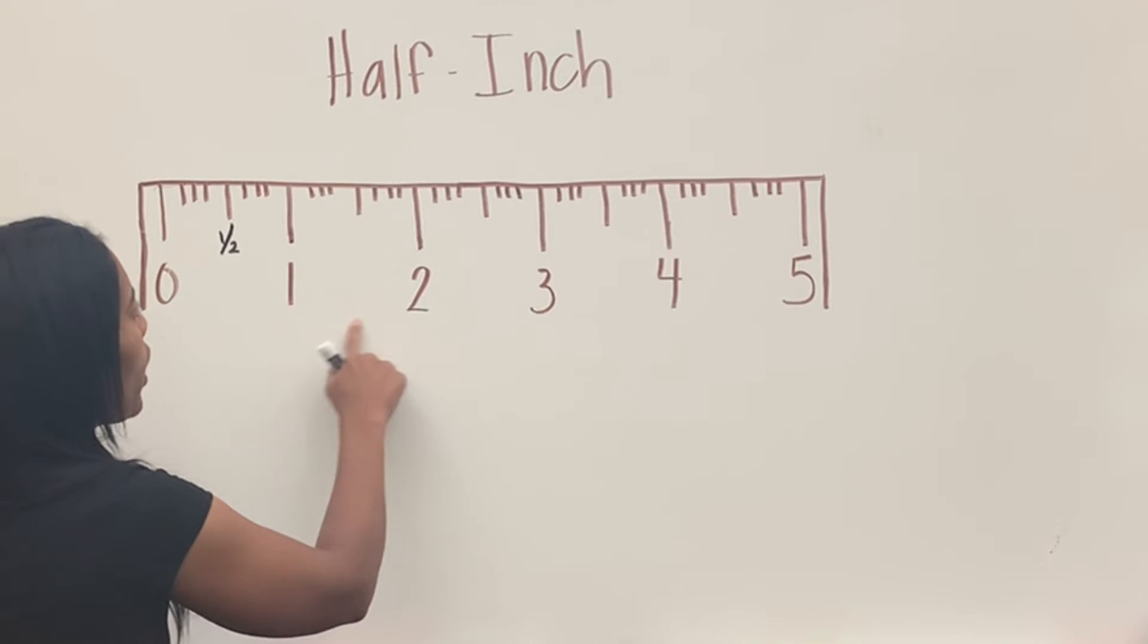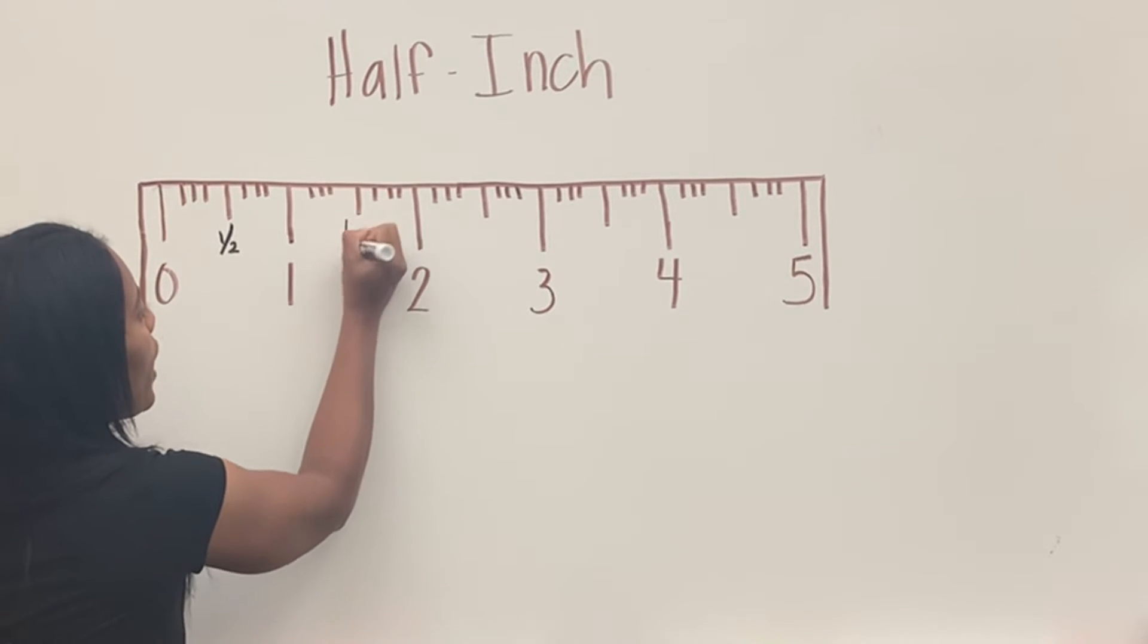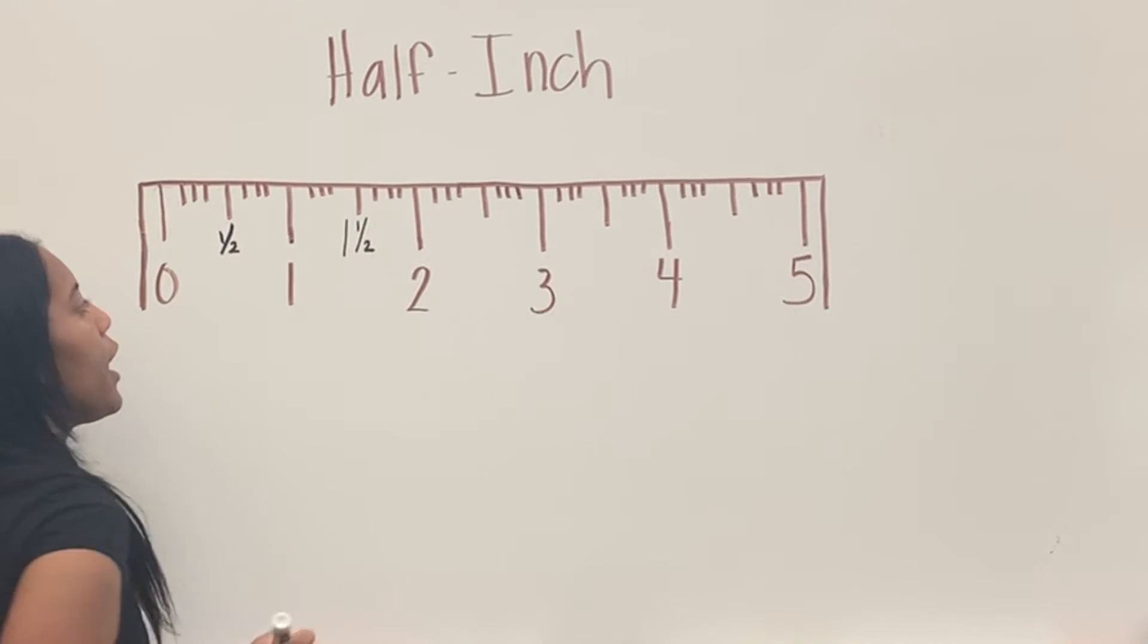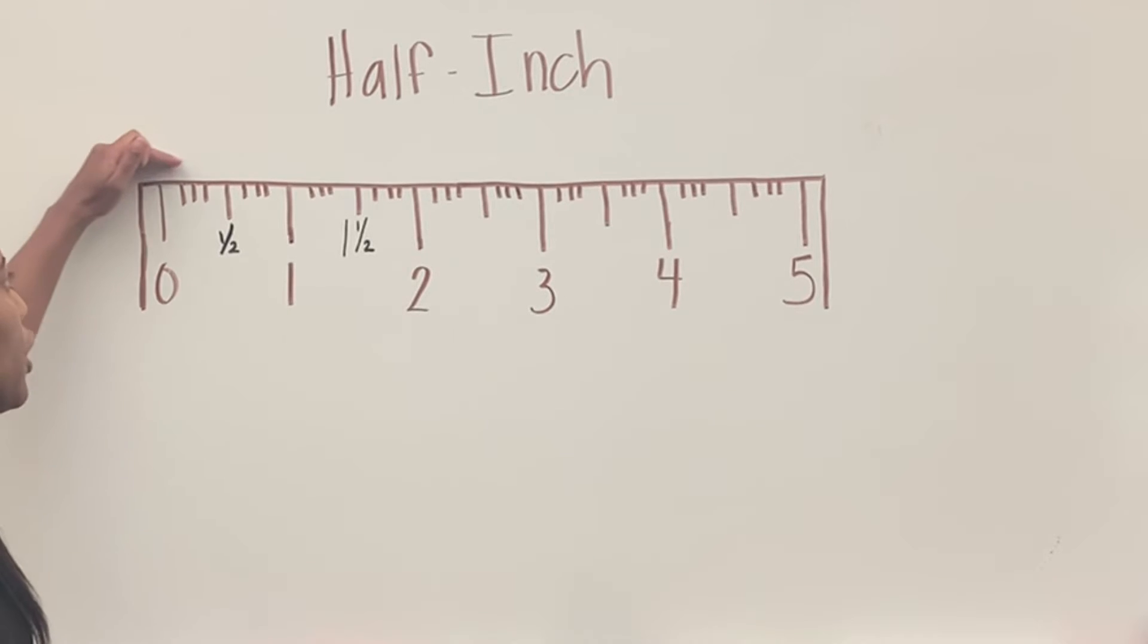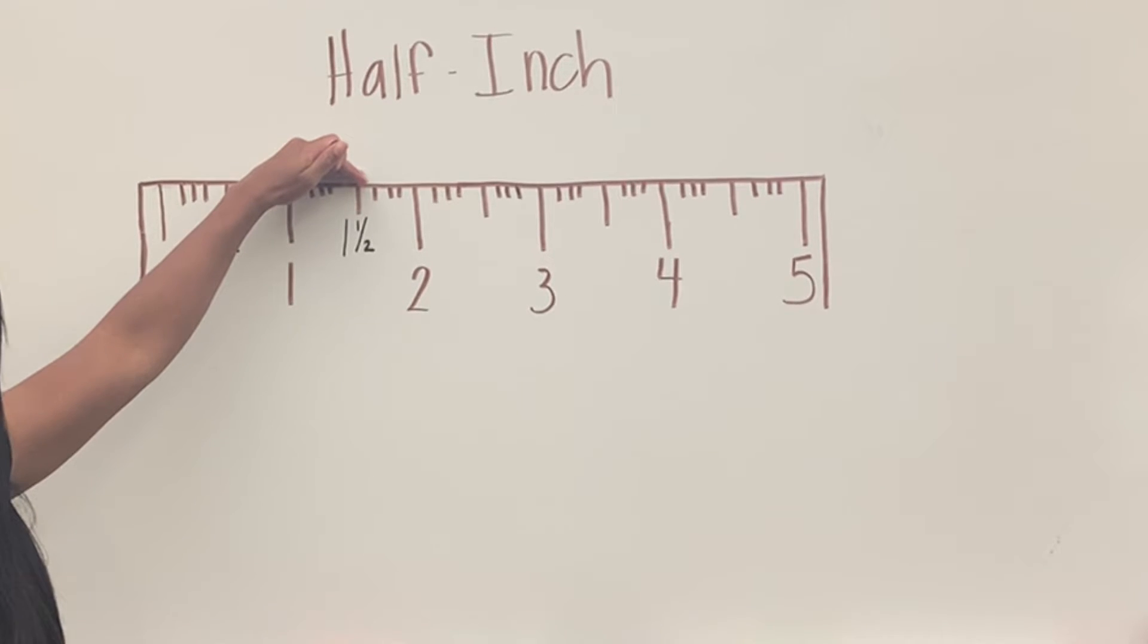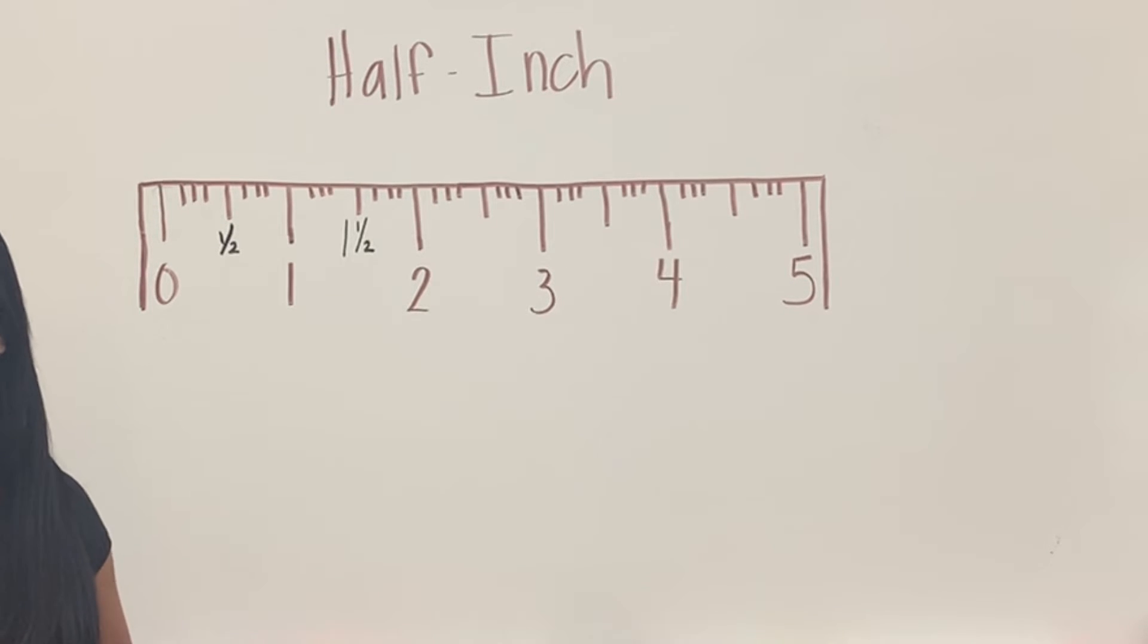So if I go between one and two, this is one and a half inches, because it is one full inch, but then it stopped halfway. It didn't go all the way to two. That's how you measure to the nearest half inch.